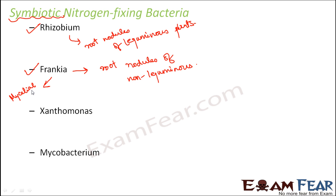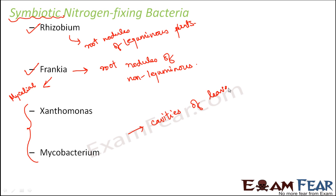Besides Rhizobium and Frankia, there are other nitrogen fixers like Xanthomonas and Mycobacterium. These are present in the internal cavities of leaves of plants. One such example of a plant that contains nitrogen fixing bacteria in the cavities of its leaves is Ardisia.